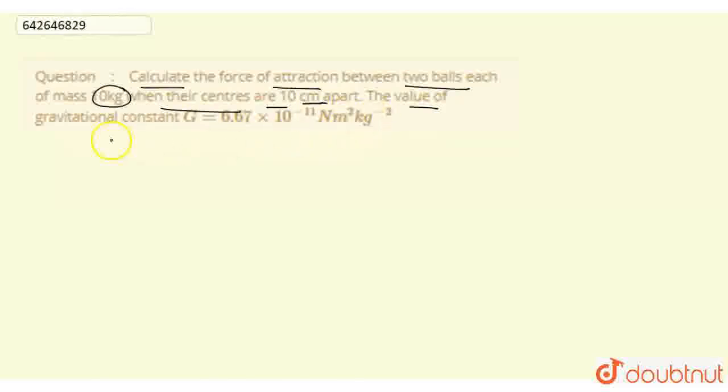Now, what is the mass? The value of M1 and M2 is 10 kg. The separation distance is capital R.